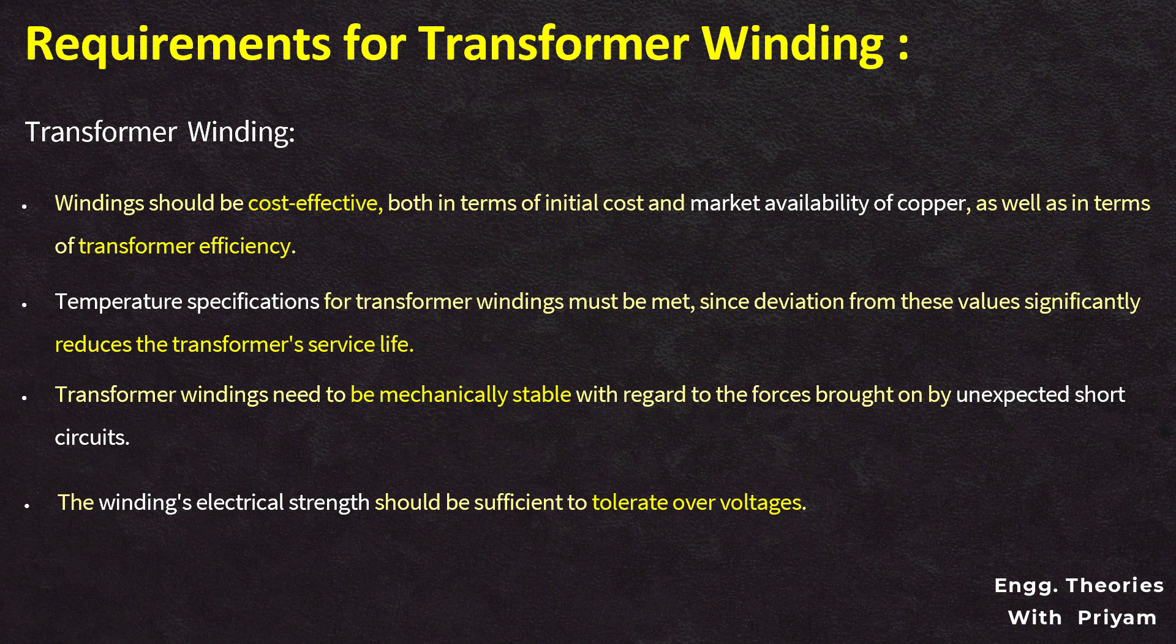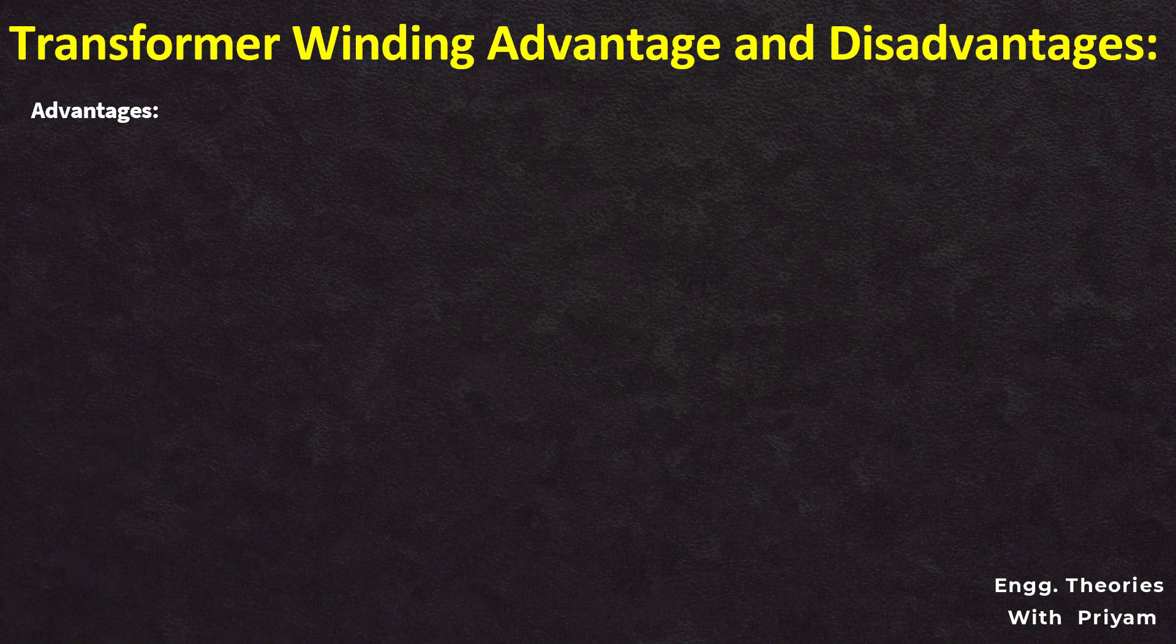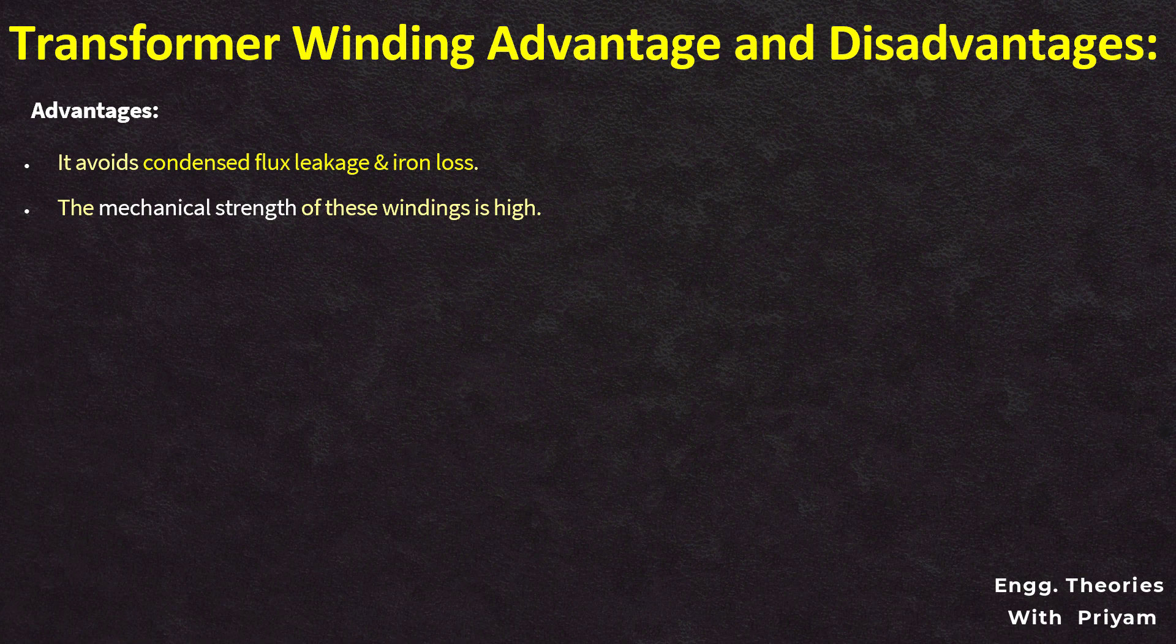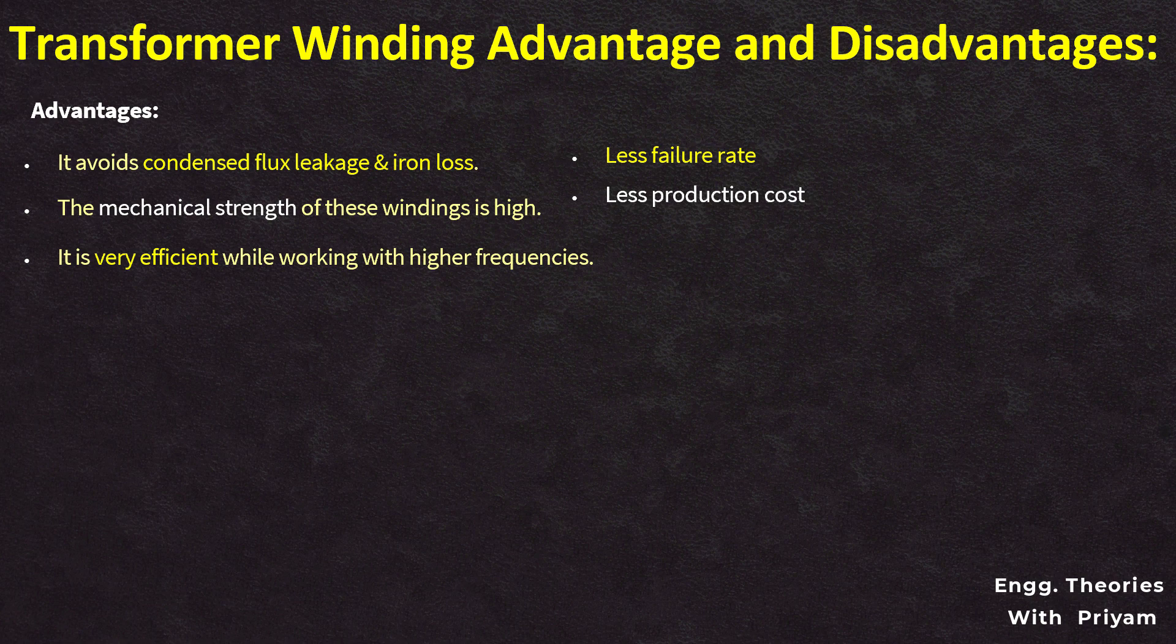With transformer windings, high context flux leakage and iron loss can be avoided. The mechanical strength of these windings is high. They are very efficient while working with higher frequency, have less failure rate, and the production cost is very low.